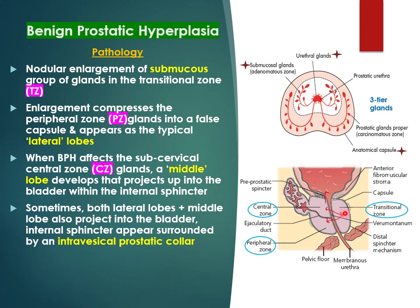The origin of BPH starts in the transitional zone. As it extends into the peripheral zone, it causes compression and enlargement of the lateral lobes. Hypertrophy of the glands in the central zone will also extend into the base of the bladder. So it originates from the submucous glands, the transitional zone compresses the peripheral zone into forming prominent lateral lobes, and the middle lobe can extend into the base of the bladder. In some cases the enlarged prostate can involve the neck of the bladder like an intravesical prostate.